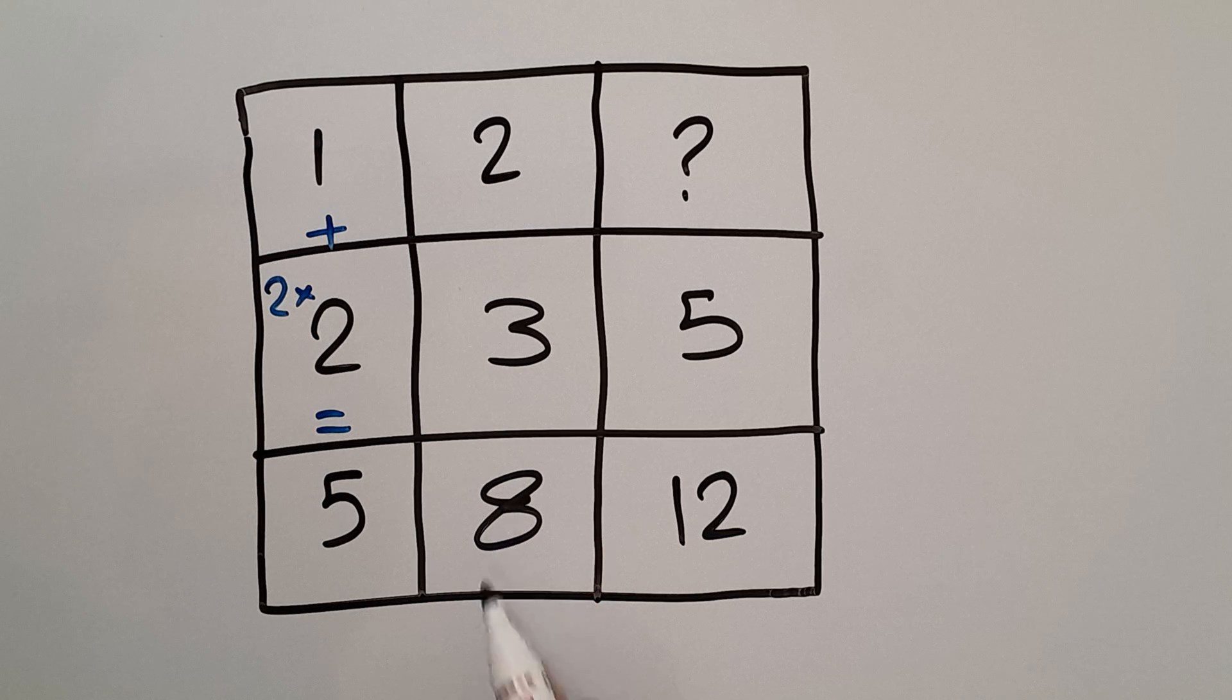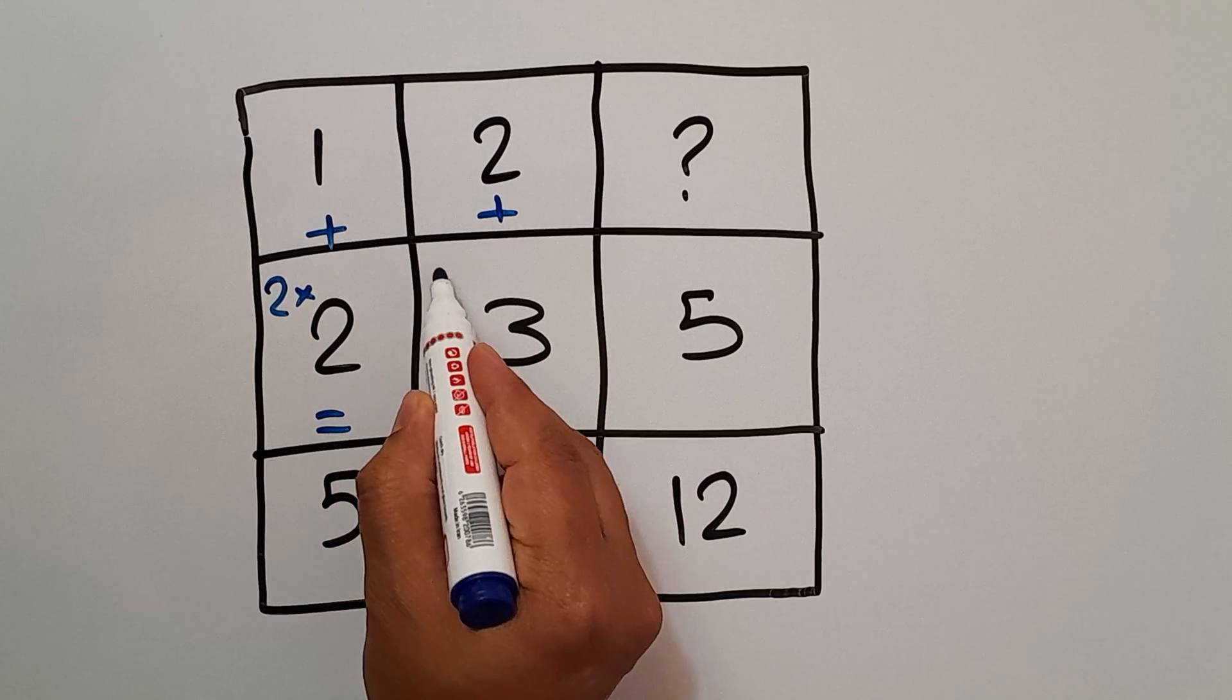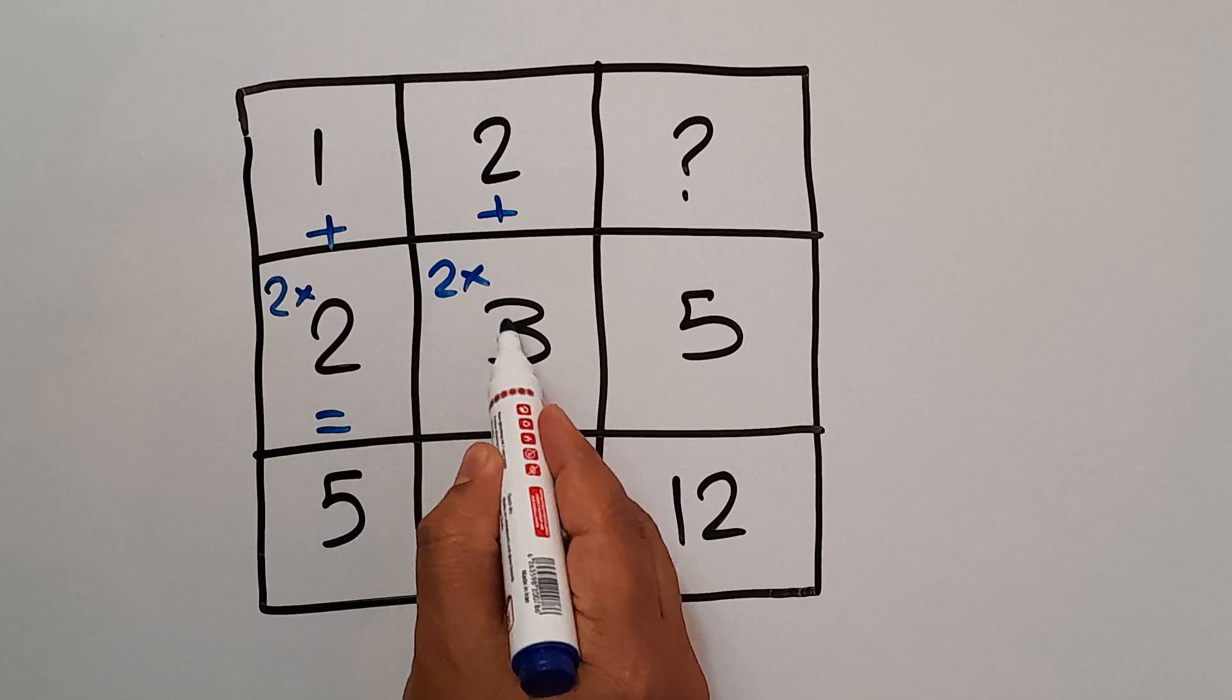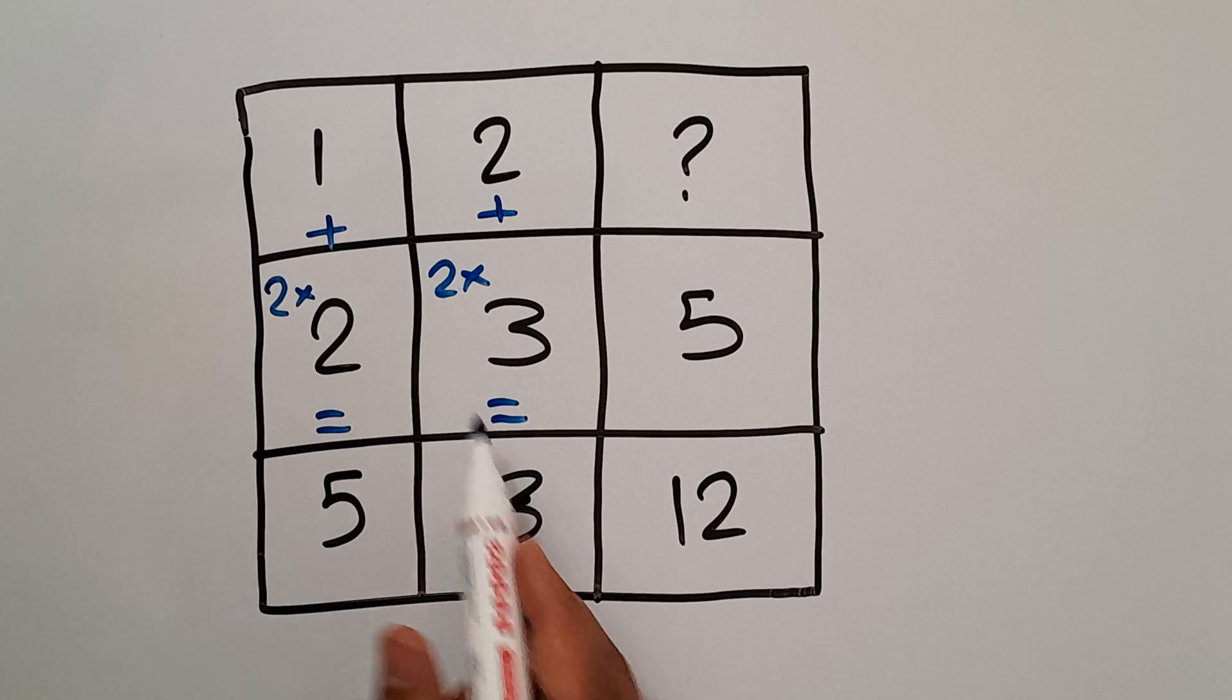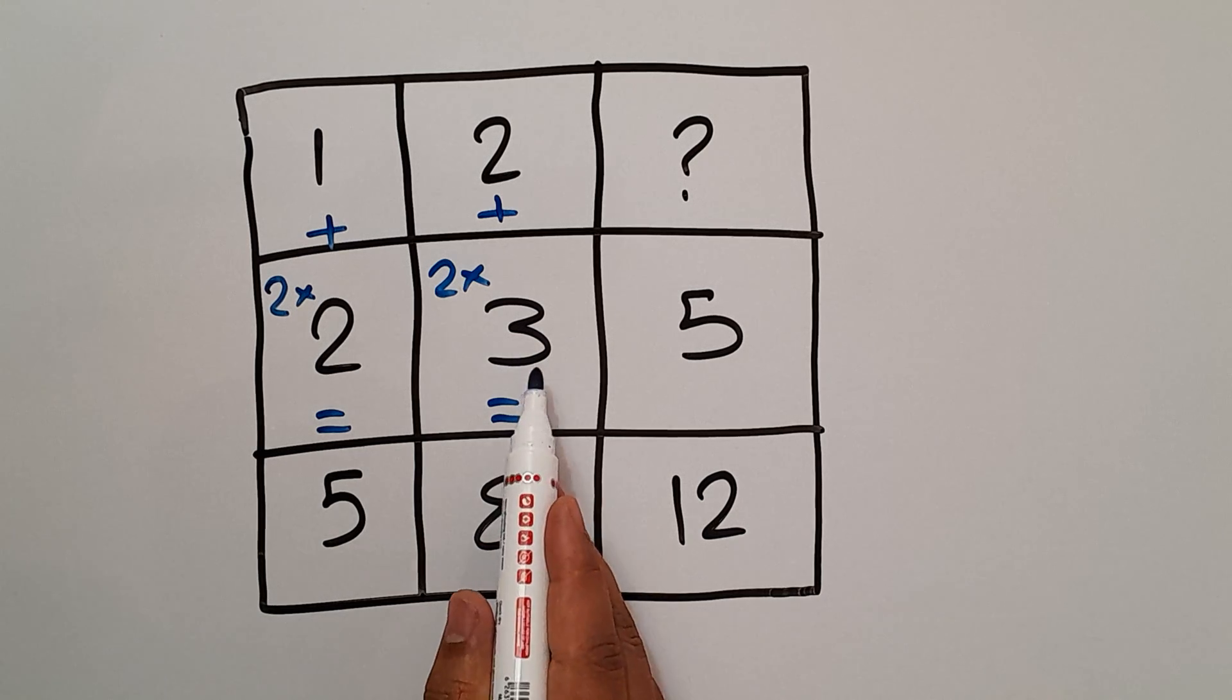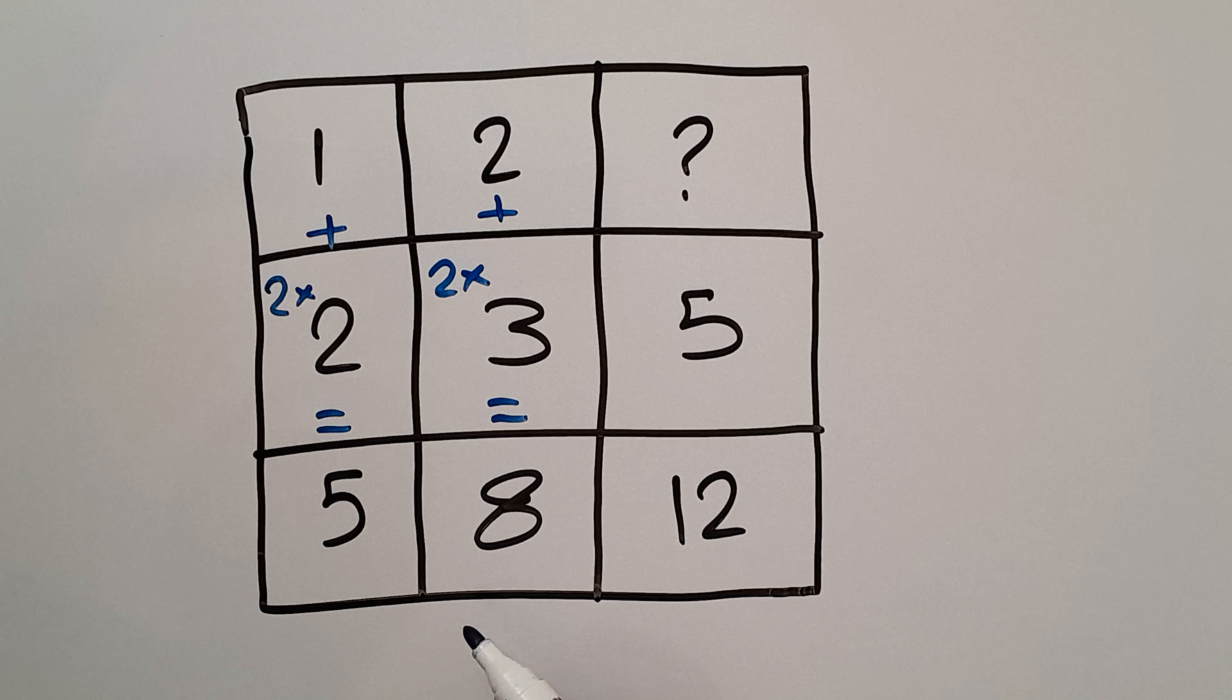And in the second column, we have 2, 3, and 8. 2 plus 2 times 3 gives us 8 because 2 times 3 equals 6, and 2 plus 6 is 8.